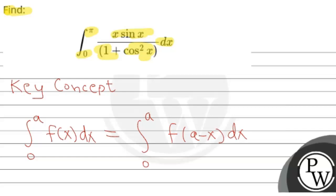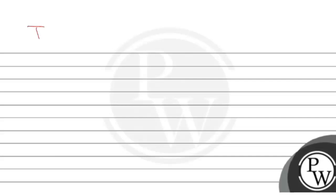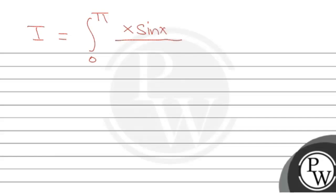First, let's define I as equal to the integration from 0 to π of x·sin x upon (1 + cos²x) dx. Now we apply the property to find what this integral becomes.